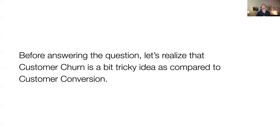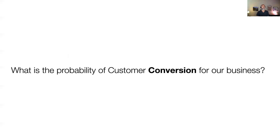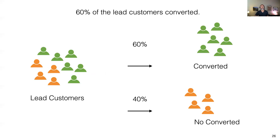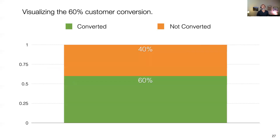But before answering that question, let's realize this customer churn is a bit tricky idea compared to customer conversion. Let's talk about conversions. What is the probability of customer conversion for our business? It's actually kind of simple — when you have 10 lead customers and out of which six converted, that means 60%. So we can say our conversion rate is 60%.